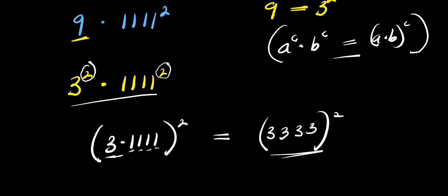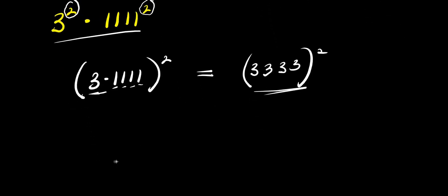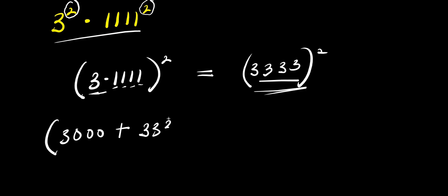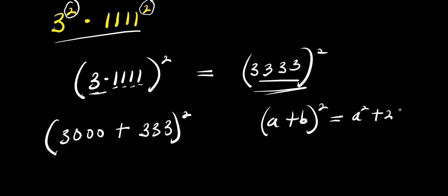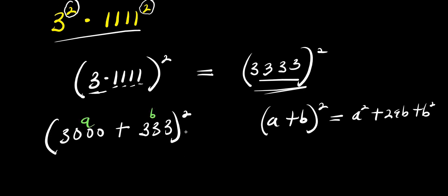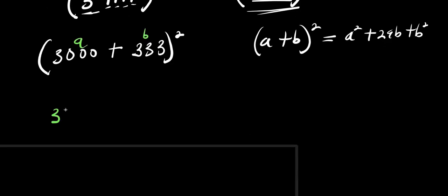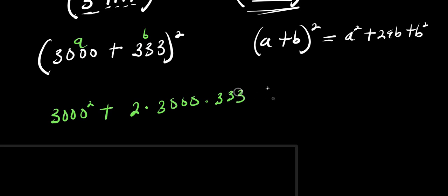Now how do we expand 3333 squared? We can apply this identity: express 3333 as 3000 plus 333, raised to the power of two. Using (a plus b)² equals a² plus 2ab plus b², where a is 3000 and b is 333, we get: 3000² plus 2 times 3000 times 333 plus 333².